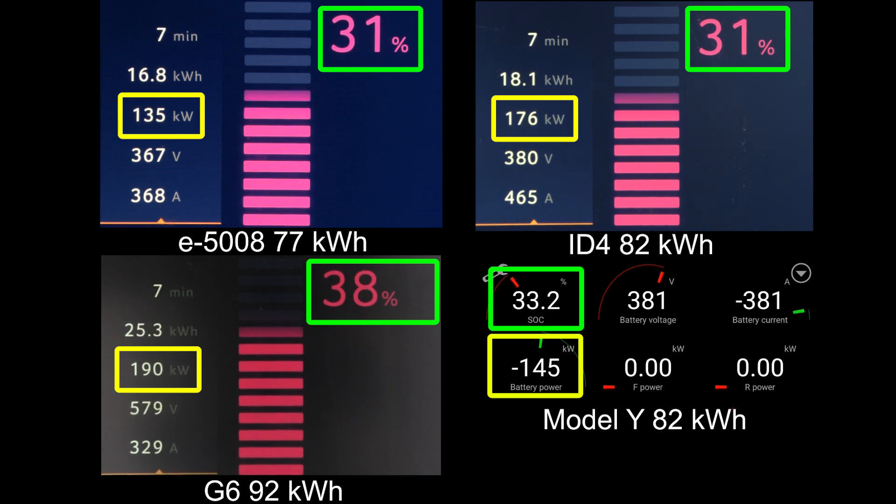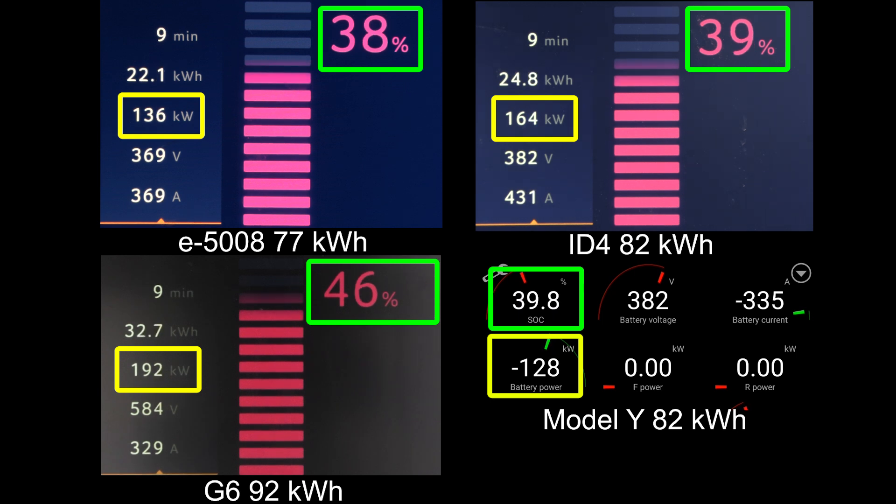But already now you see that the G6 is way ahead of the competitors. Actually Model Y is right behind because it had that nice peak, but already now, which car is in the bottom here? It's actually the E5008.